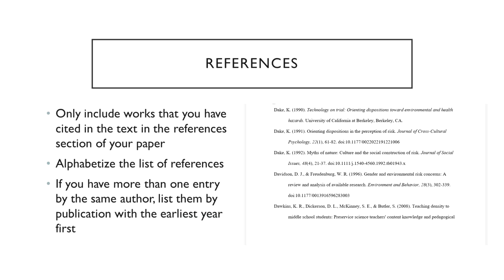You only include works in your reference list that you have cited in the text. Your reference list is a compiled list alphabetically by author, by the last name of the author, based on your in-text citations. You do not include anything in your reference list that has not been used as an in-text citation — you don't throw extra stuff in there. If it's not used in an in-text citation, it does not appear in the reference list.